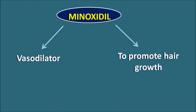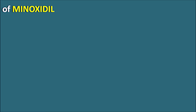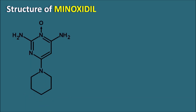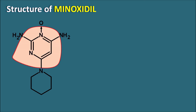Today let us see how Minoxidil acts as a vasodilator. Looking at the structure of Minoxidil, we can observe two types of heterocyclic ring systems. One of the heterocyclic ring systems has two nitrogens — this is the pyrimidine ring. Starting the numbering from the nitrogen: 1, 2, 3, 4, 5, 6 — this is a 2,4-diamino pyrimidine.